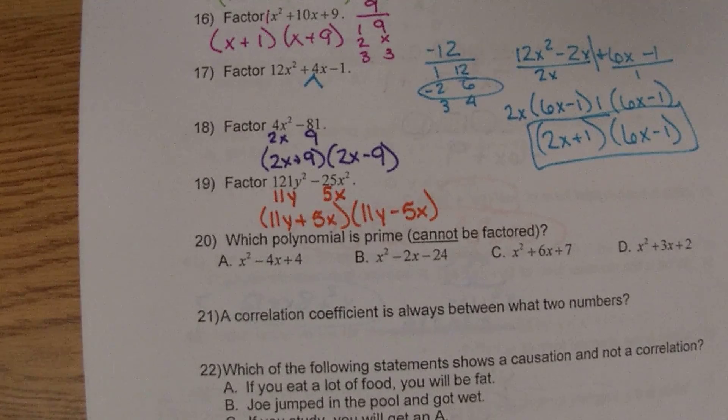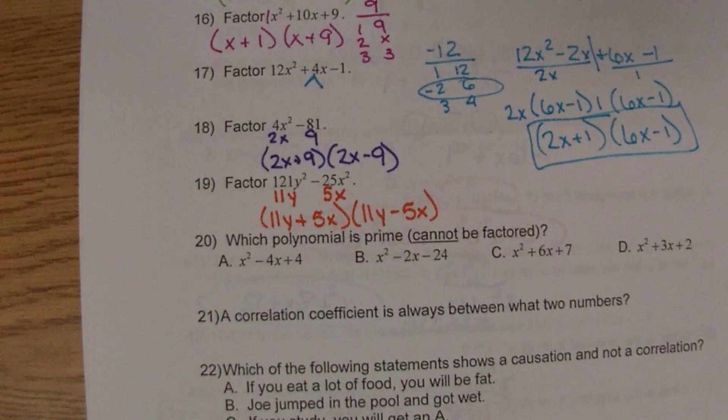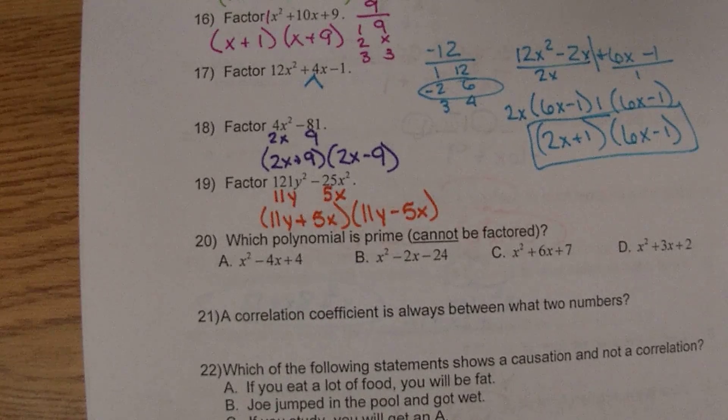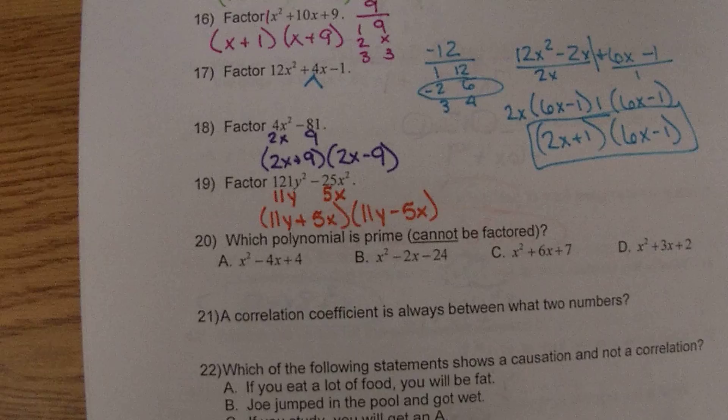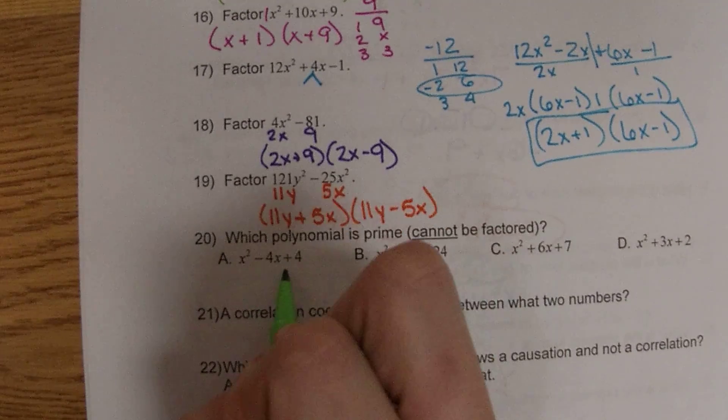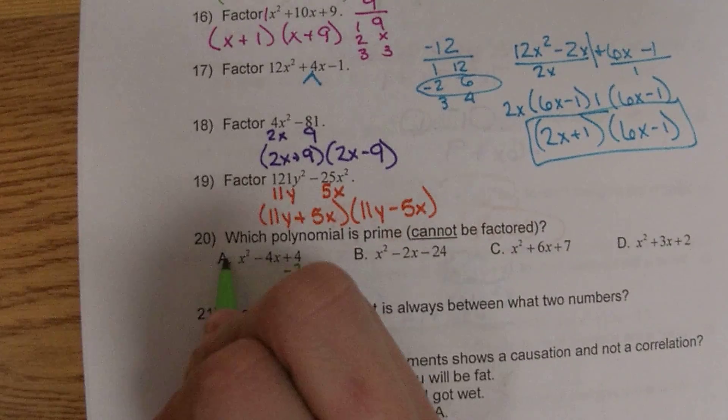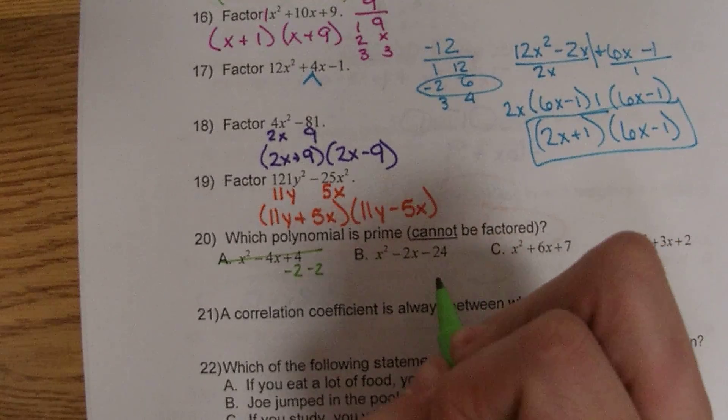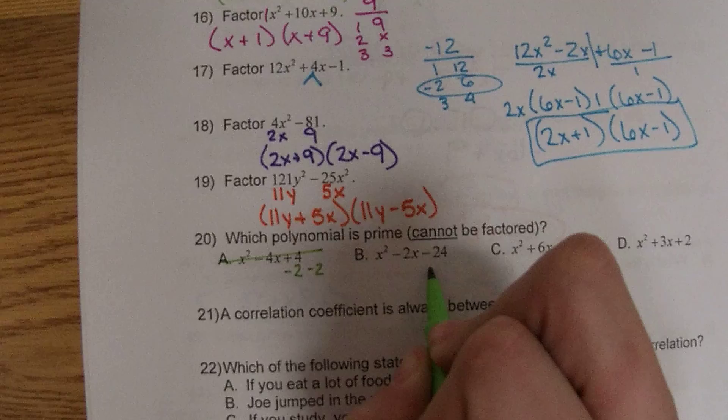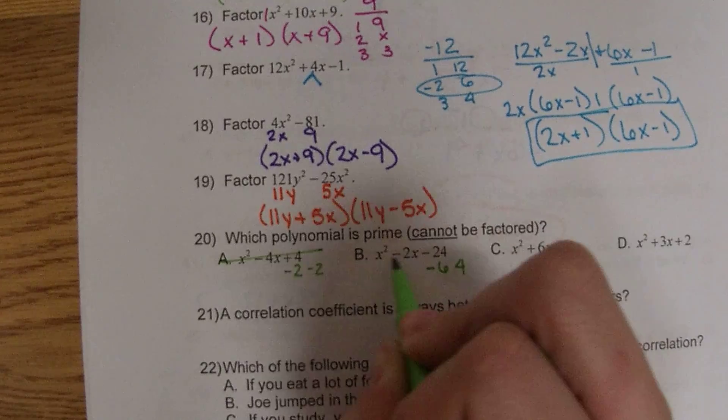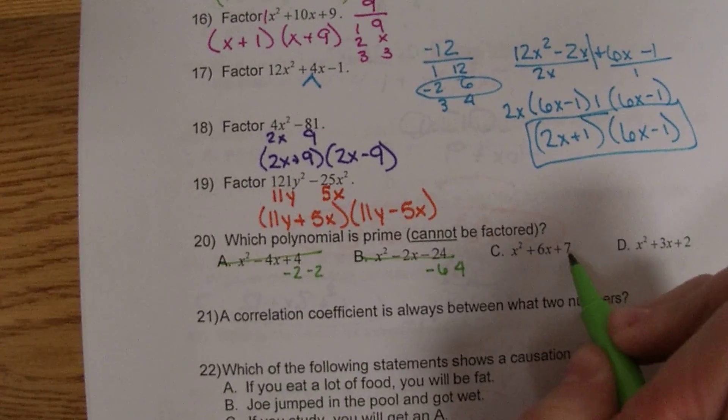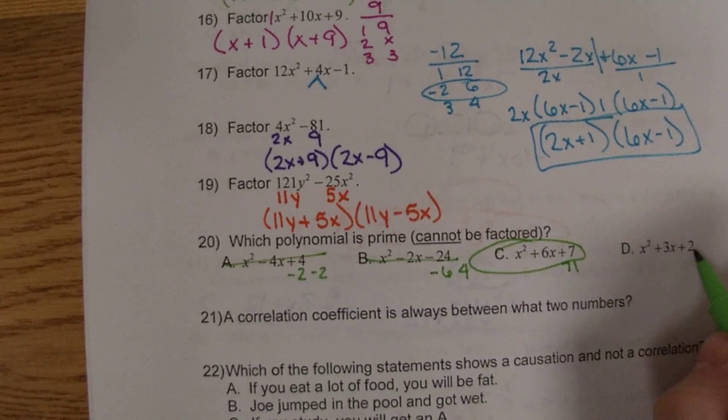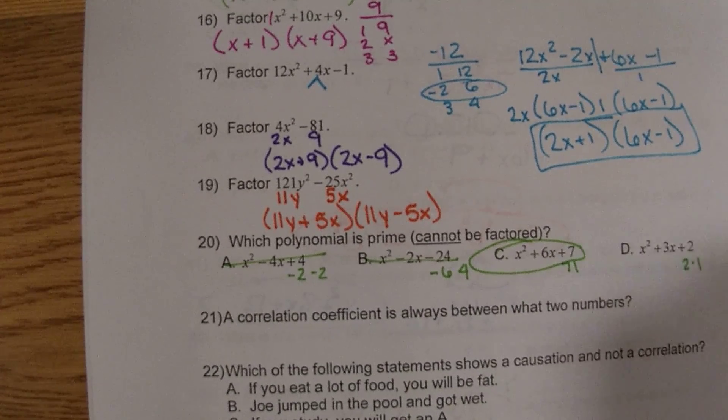20, which polynomial is prime? Prime means that it cannot be factored. So if we go down the list here, 4, we can pick sets of negative 2 and negative 2 that will add up to negative 4. Negative 24, we can pick a set of negative 6 and positive 4. 7 only has a set of 7 and 1, so there's nothing that will give us 6. 2 times 1 would give us 3.